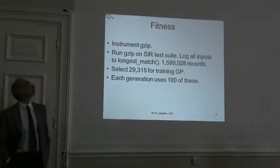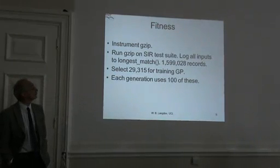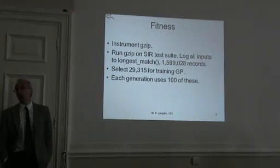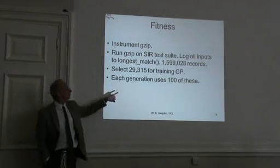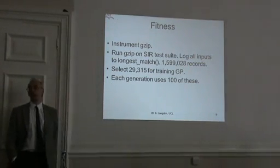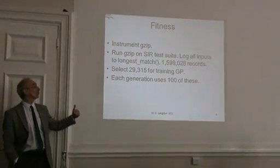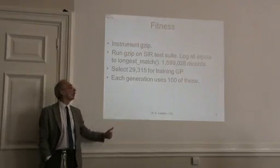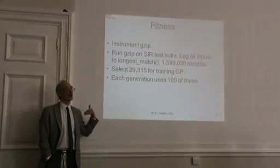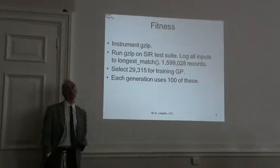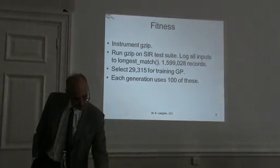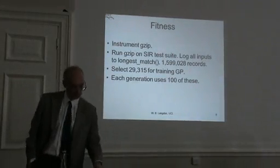gzip is taken from the SIR repository, which includes a test suite. We have a series of tests we can run, giving something like a million and a half test records, pared down to about 30,000 mostly by eliminating duplicates. Of those 30,000, we randomly choose 100 each generation of GP. So the fitness is based on a subset of all the SIR test cases — but as we'll see, we actually evolved something that can pass them all.